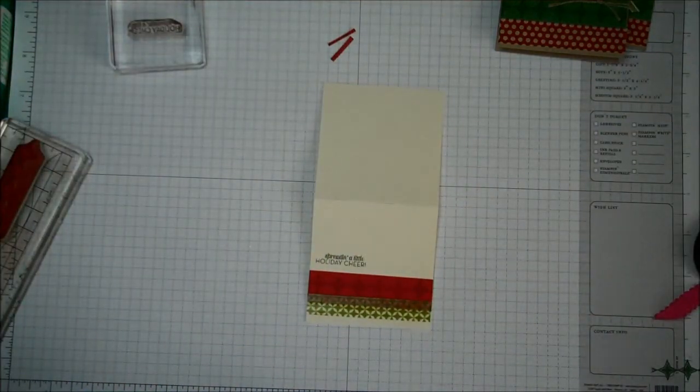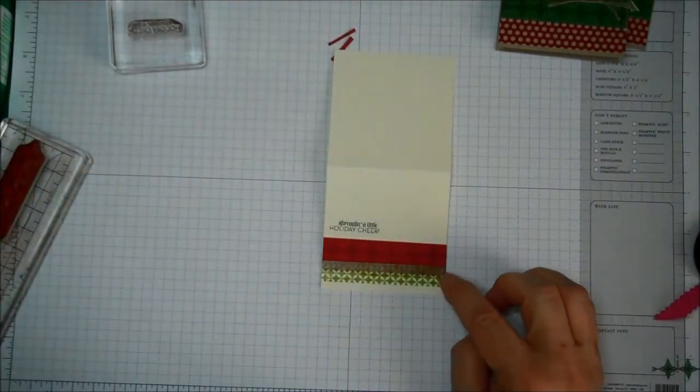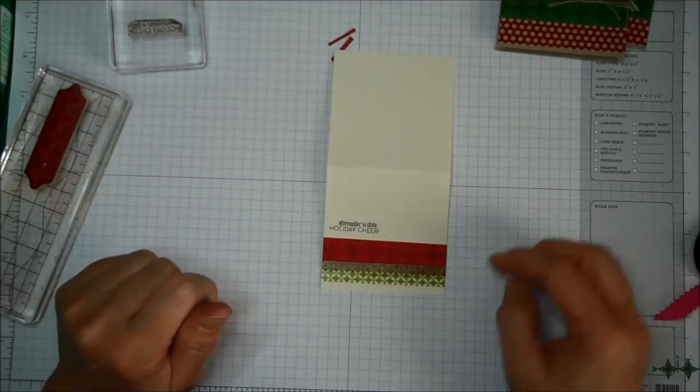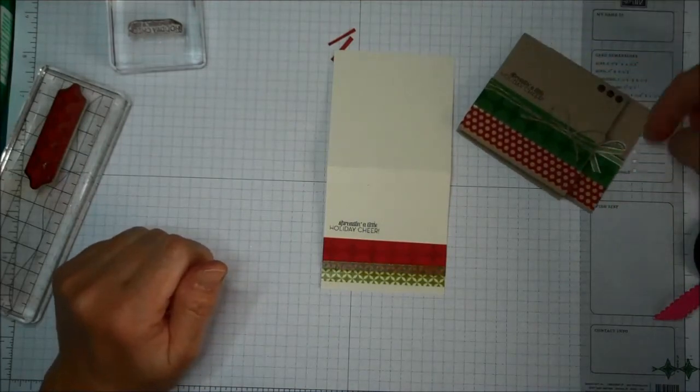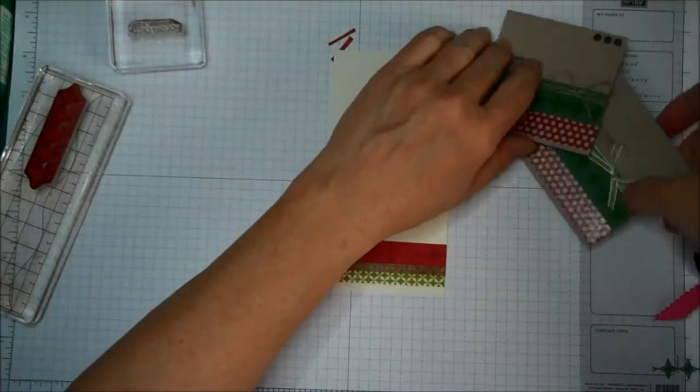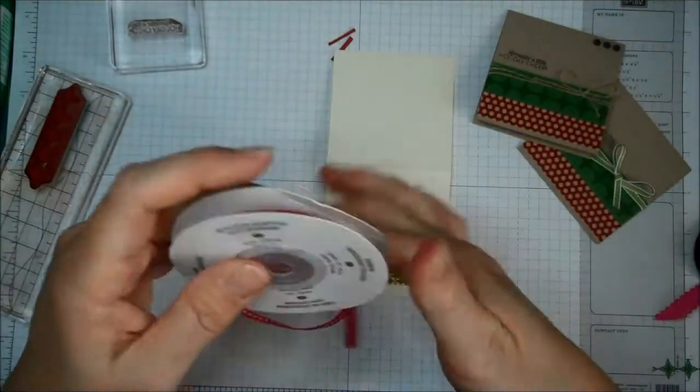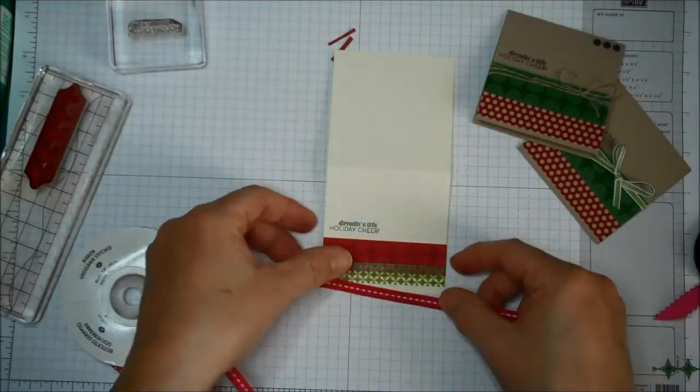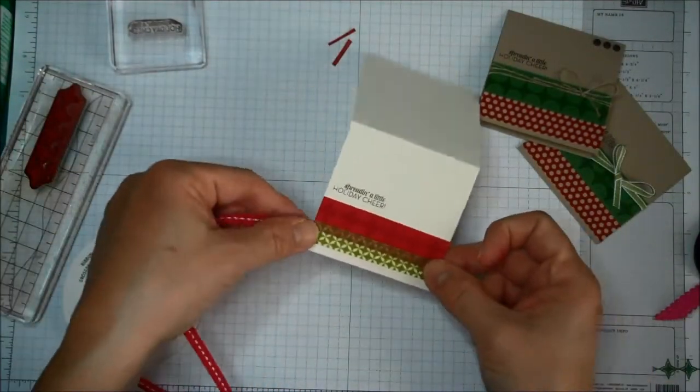Now I'm just going to add a little ribbon. And I would like to add, I think in this case, I've used linen thread. I've used the Old Olive on this one. I want to use this Real Red right here. And this time I think I'm going to put it right here where the seam is.